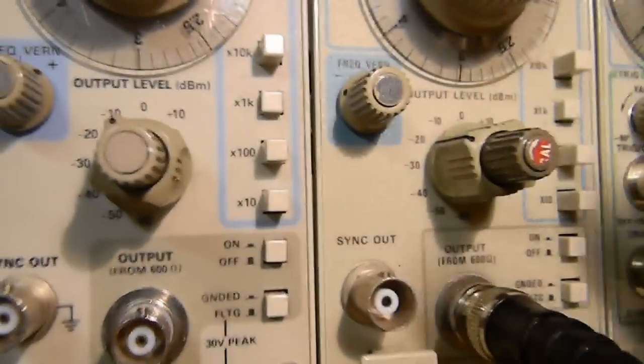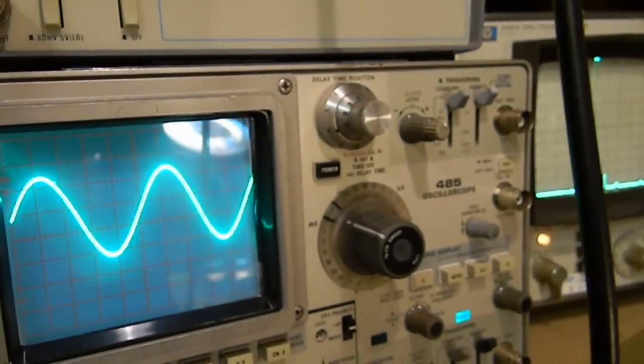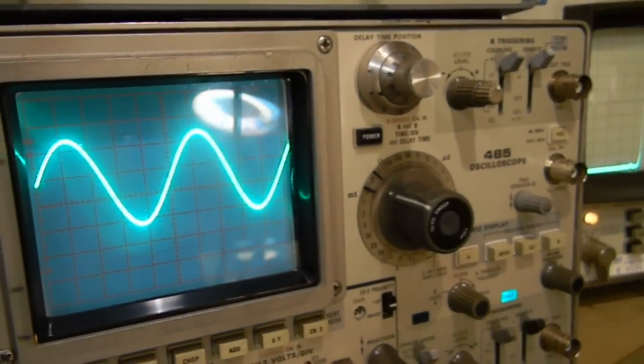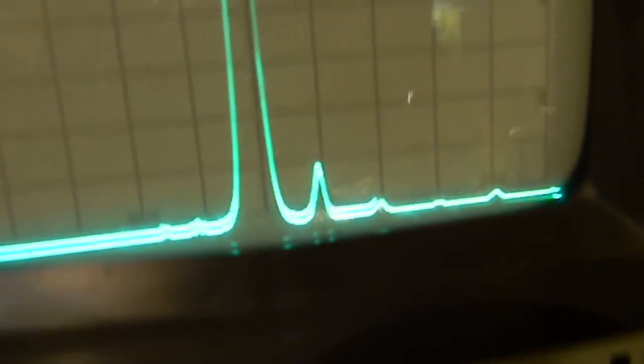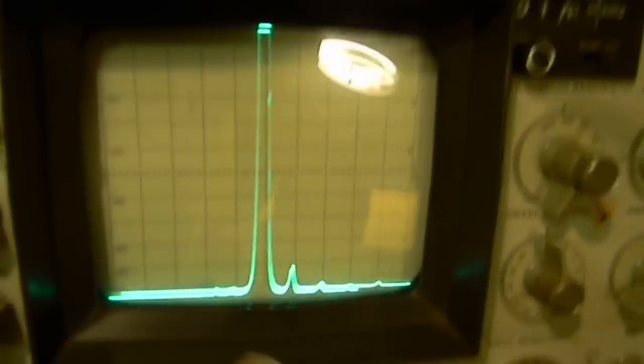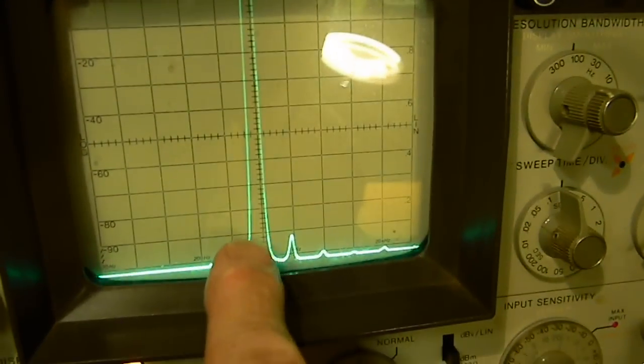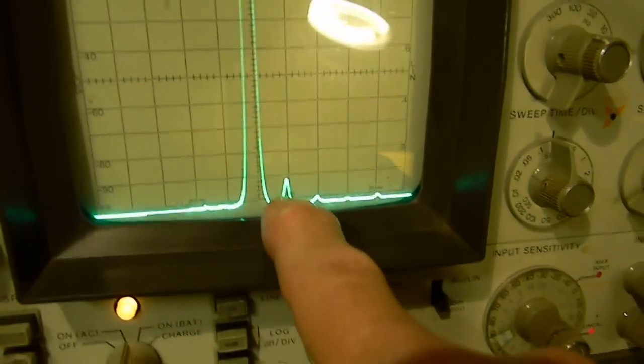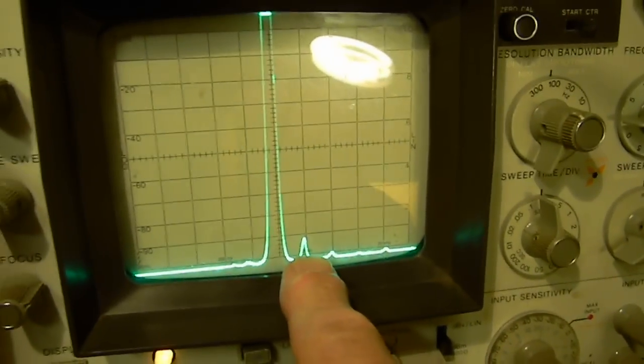Where it'll drop dramatically. We have to go back up here and go from minus 40 to minus 20 and back that off a bit. Okay, well actually we got the same thing there. This is our fundamental frequency of one kilohertz right here. This is our first harmonic, harmonic distortion.